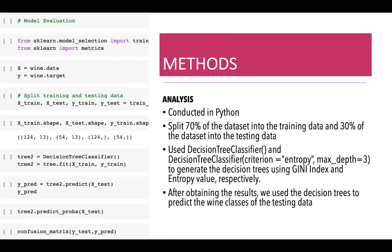Then we used decision tree classifier without any criterion to generate a decision tree using the Gini index, and also the decision tree classifier with criterion equal to entropy to generate the decision tree using the entropy value.